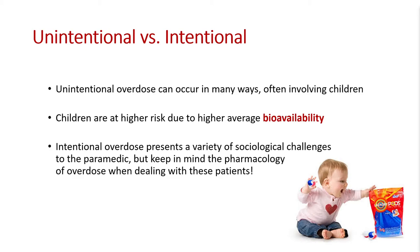Overdose comes in many shapes and forms. Thinking about why the overdose occurred is probably where to start. Unintentional overdose occurs all the time — often involving children, but also adults who've simply taken a lot of pain medication innocently. Children are at higher risk because they're smaller and have higher average bioavailability due to a more efficient cardiovascular system or different body composition. This all presents challenges — some sociological, some physical. Keep the pharmacology in mind: is this patient going to become critically ill in the next short period?